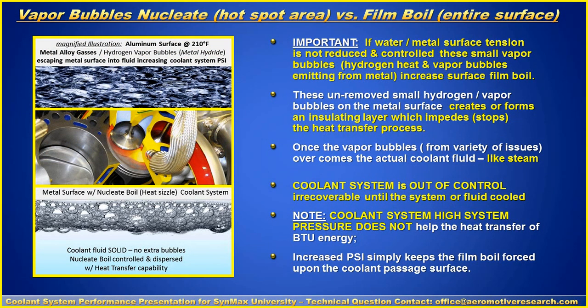Now what's important is that if the heat of the water and metal surface tension does not reduce and are controlled, these small vapor bubbles or hydrogen heat and vapor bubbles emitting from the metal increase surface film boil. These unremoved small hydrogen vapor bubbles on the metal surface create or form an insulating layer which impedes or stops the heat transfer process. Once the vapor bubbles from a variety of issues overcomes the actual coolant fluid like steam, it's a real problem. Then the coolant system is out of control — it's irrecoverable until the system or fluid is cool.